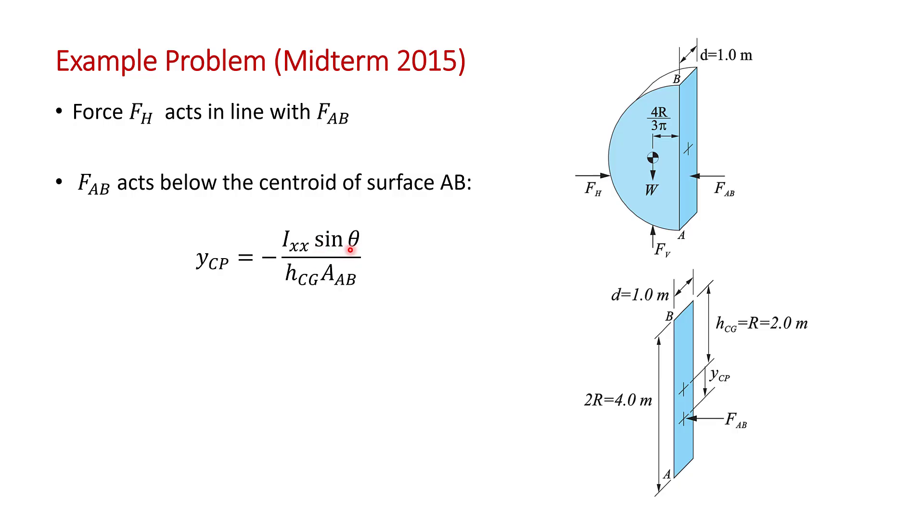In this case, it's a vertical gate. So theta is 90 degrees. The surface meets the free surface at an angle of 90 degrees. The height of the center of gravity of surface AB and area AB, these are pretty straightforward.